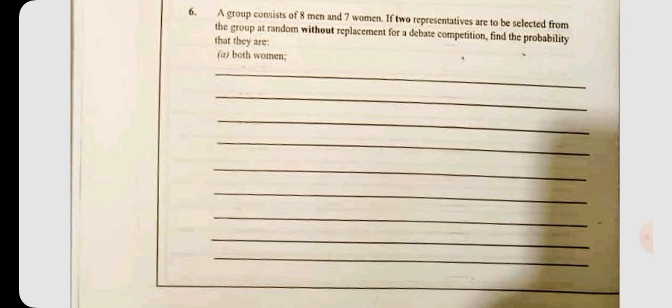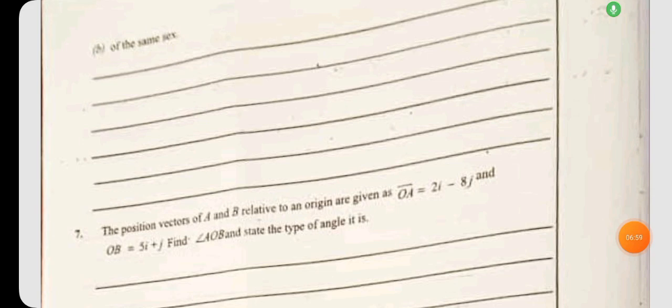A group consists of eight men and seven women. If two representatives are to be selected from the group at random without replacement for a debate competition, find the probability that they are A, both women, B, of the same sex.